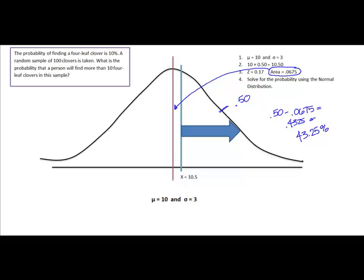Once you get past those first two steps of calculating the mean and the standard deviation and then making a correction to the discrete variable to transform it into a continuous variable, the rest of this problem solves exactly like the rest of your normal distribution questions. Hope this helps!